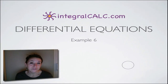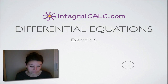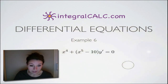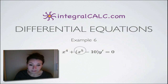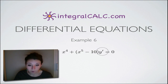We're going to be doing another differential equations problem today. This one is also going to involve u-substitution, but the problem is x to the 4th plus x to the 5th minus 10 times y prime, or the derivative of y, and that's set equal to 0.